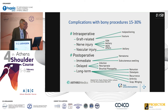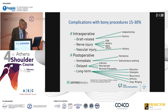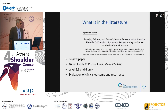Complications with bone procedures are rated very high in most publications — usually between 15 and 30%. They are divided into intraoperative complications such as graft-related malpositioning and fracture, nerve injuries, and vascular injuries (which are quite rare). Post-operative complications include immediate ones like hematoma and swelling, as well as delayed ones such as infection and neuropraxia.